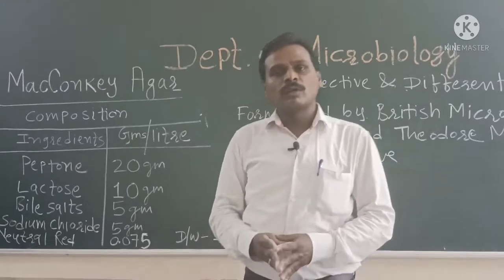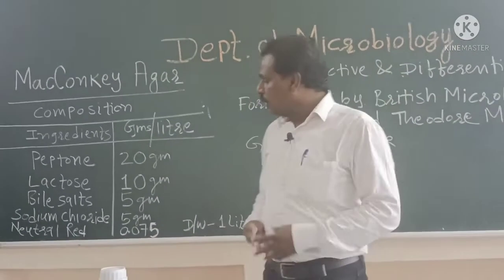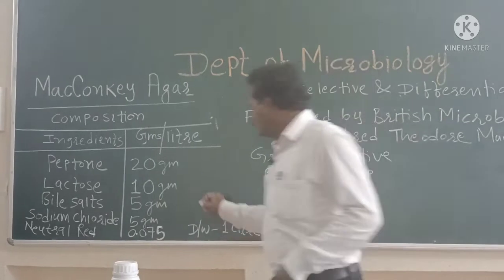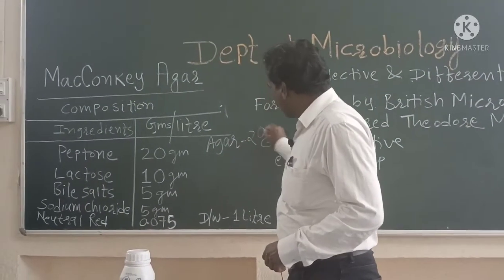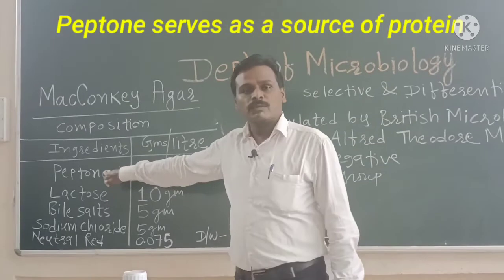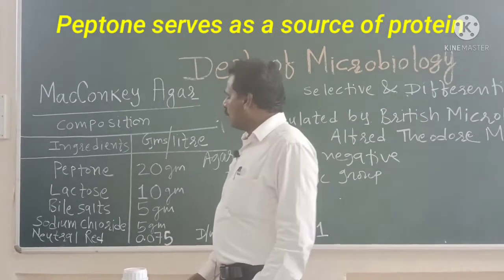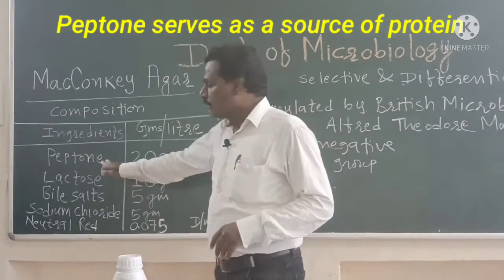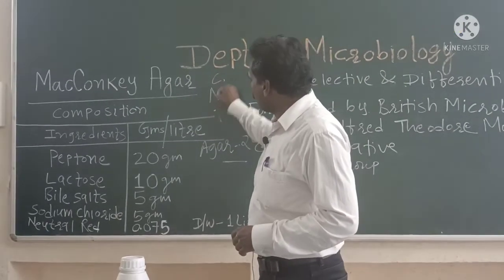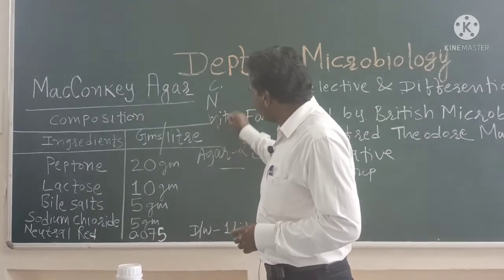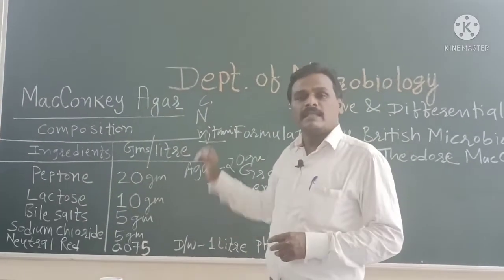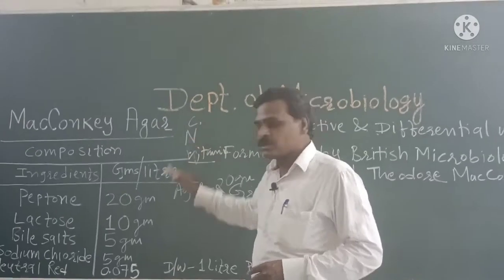We can make MacConkey's broth as well as MacConkey's Agar. MacConkey's broth will contain all the ingredients but will lack agar. For the agar medium, agar at 2% — that is 20 grams — is added. Peptone is one of the most important components. It serves as the source of nitrogen and provides many essential nutrients including carbon, nitrogen, and vitamins. It is required for the growth of most microorganisms.